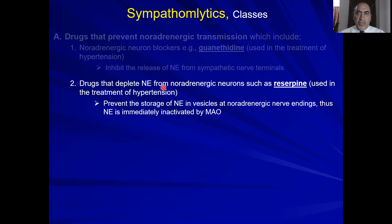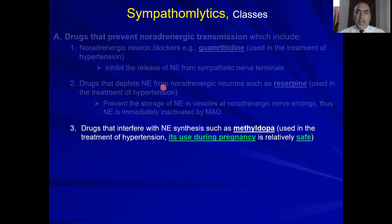Reserpine prevents the storage of norepinephrine — it blocks carrier VMAT, blocking the storage of norepinephrine in the vesicles and making it liable to inactivation by the monoamine oxidase enzyme. Alpha-methyl-DOPA inhibits the synthesis of norepinephrine at the step from DOPA to dopamine, and is one of the safest drugs used in pregnancy. All of these are antihypertensive drugs.